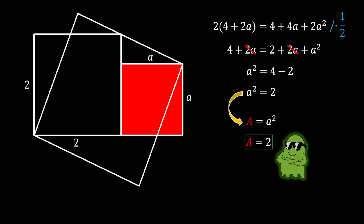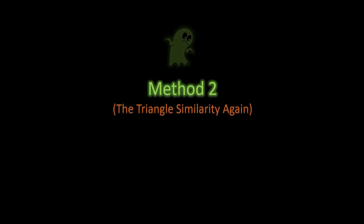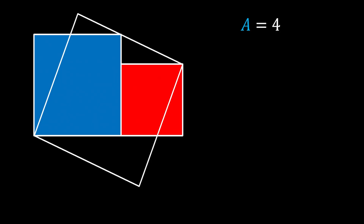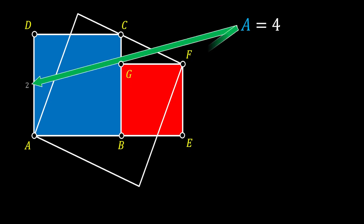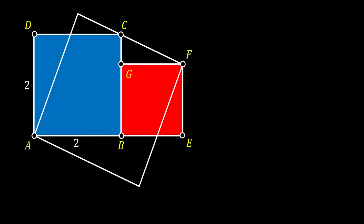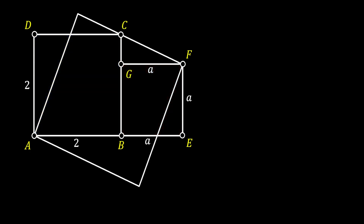Now let me show you the second method, which will also use triangle similarity but without using diagonal values. We start by again labeling the vertices of the blue square as A, B, C, D, and the remaining vertices of the red square as E, F, G. The area of the blue square is 4, so its sides are 2, and we label the sides of the red square as A. Now let's look at the line G, C — we can obtain this line using the sides of our big and small square. It must have the length of 2 minus A.